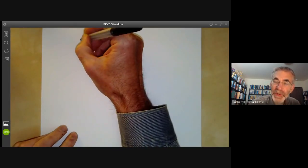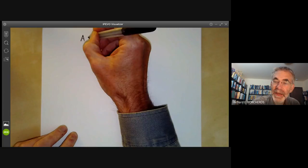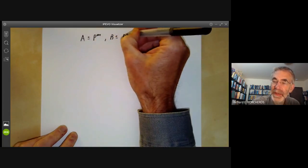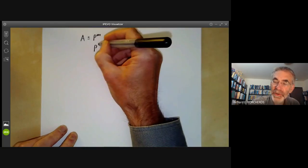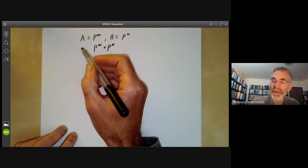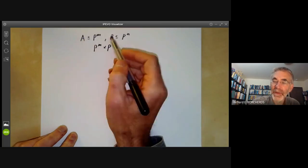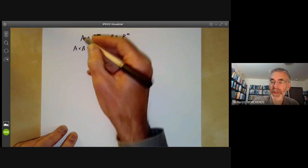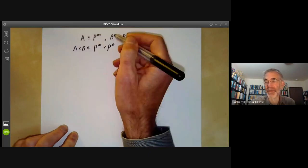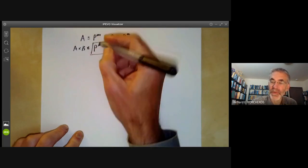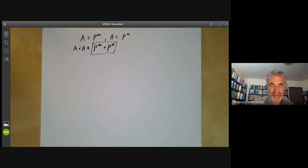So if we've got two varieties, A in P to the M and B in P to the N, if we can find a product of P to the M and P to the N, then it's not very difficult to find a product of A and B inside this, essentially just by taking the equations of A and B and combining them. So the main problem is to show the product of two projective spaces is a projective variety.